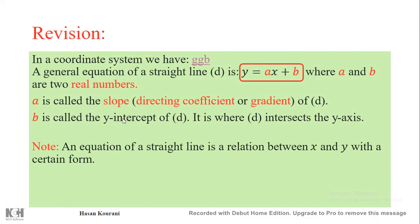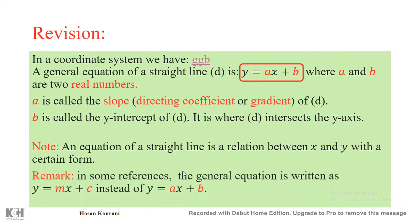An equation of a straight line is a relation between x and y with a certain form. In some references and books the general equation is written as y = mx + c, changing the letters for slope and y-intercept instead of ax + b — but the meaning is the same.